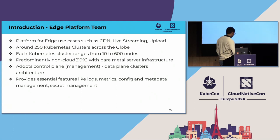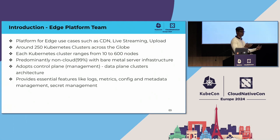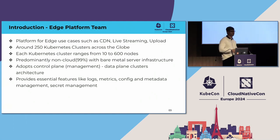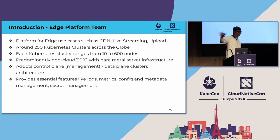As any platform team, we don't just install vanilla Kubernetes clusters and hand them over. We provide essential platform features like logs, metrics, configs, and secret management. Operators play a key role for our platform team to provide these features. If something is already available in open source, we reuse it rather than reinventing anything — we just take open source components as-is and deploy them across all these clusters.